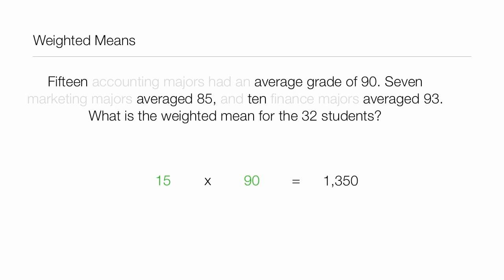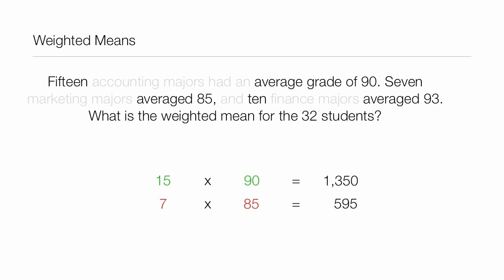There are 7 marketing majors and they averaged 85, so we take 7 times 85, which equals 595.